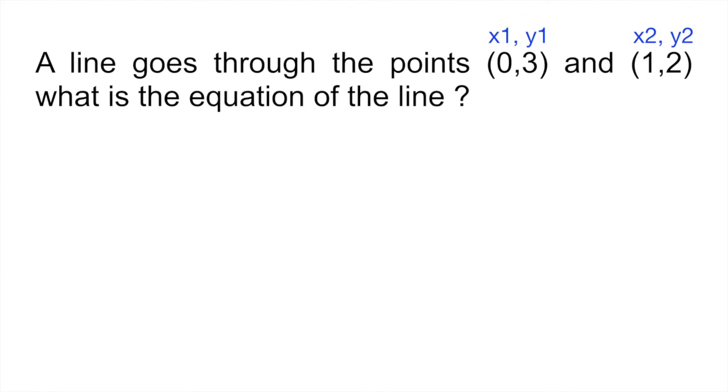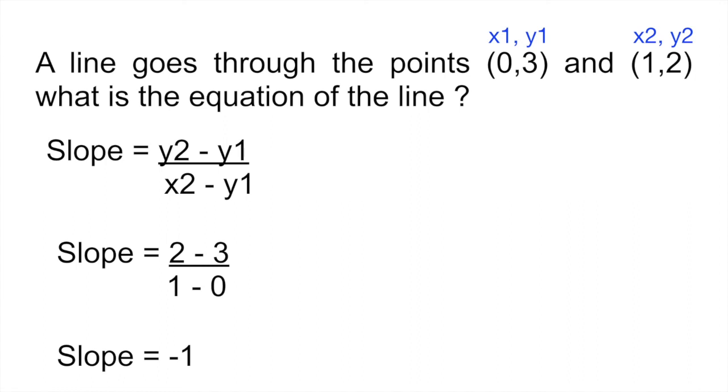If you remember the formula for a slope, this is the formula: y2 minus y1 divided by x2 minus y1. Excuse me, that's a mistake. y2 on the top minus y1 divided by x2 minus x1. If you plug your numbers in like that, it would be 2 minus 3 divided by 1 minus 0. And that gives you that the slope is minus 1.